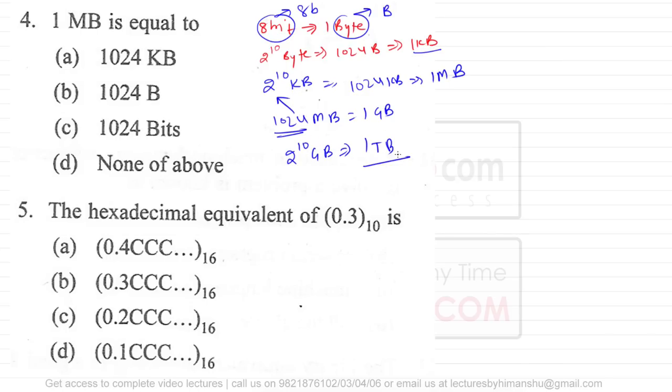2 raised to power 10 gigabytes is equivalent to 1 terabyte. So 1 megabyte is equivalent to 1024 kilobytes.